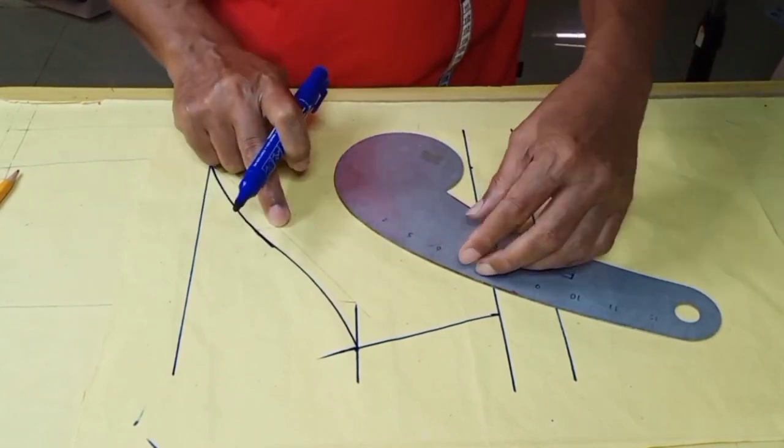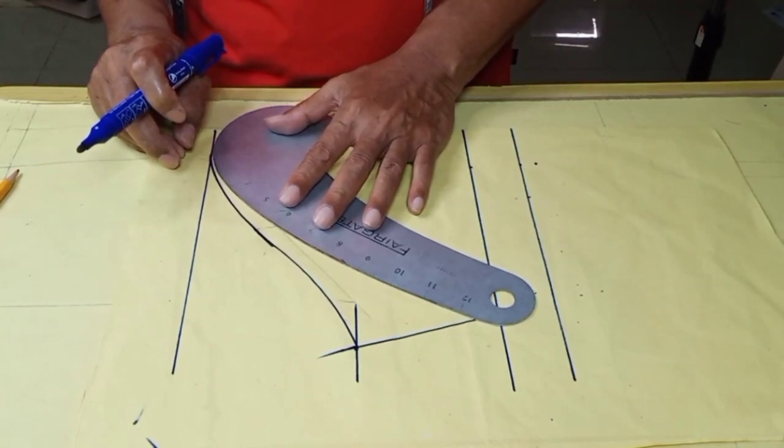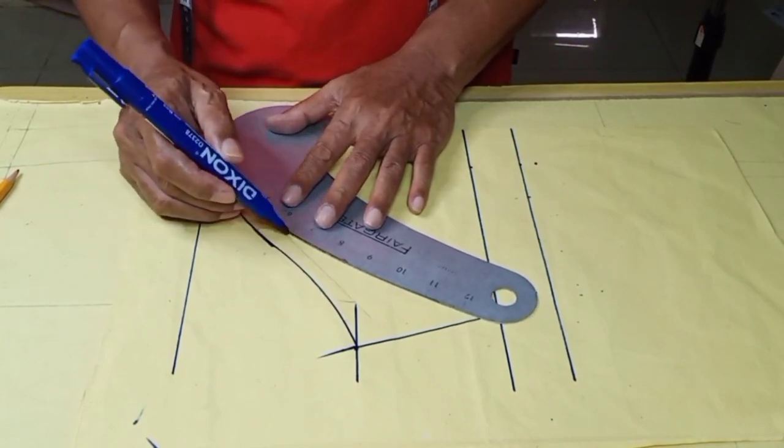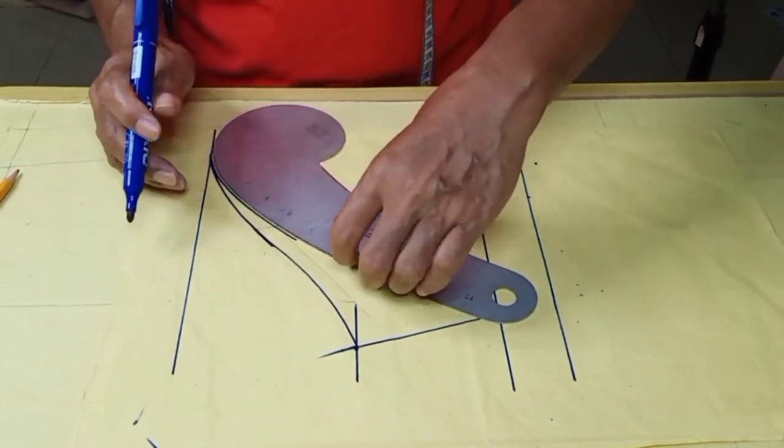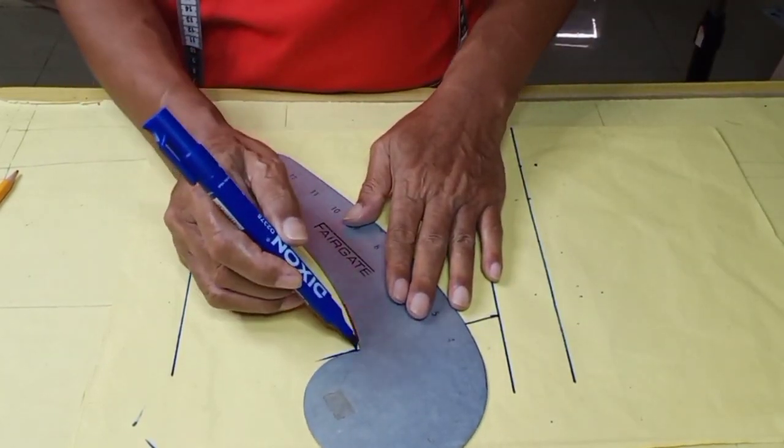This is now our back part of armhole sleeve. From here to the line is our front sleeve armhole. Draw a line on it to form our front side of sleeve armhole, just like this.